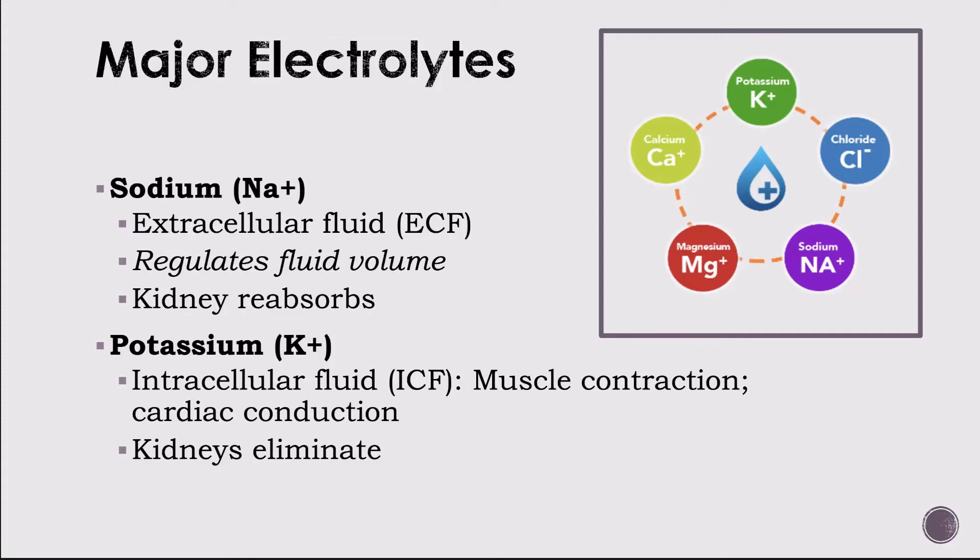Potassium, abbreviated K+, is the major cation in intracellular fluid. Only 2% of body potassium is found in extracellular fluid. It is a key electrolyte in cellular metabolism. Dietary Guidelines recommend at least 4,700 milligrams per day, though most American women ages 31 to 50 consume less than half of that. Potassium is responsible for muscle contraction and cardiac conduction. An imbalance in potassium — high or low — can affect the heart's electrical impulses, causing serious problems. Refer to table 39-3 for major electrolytes, their functions, regulation, and food sources.